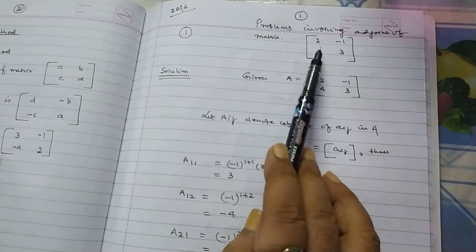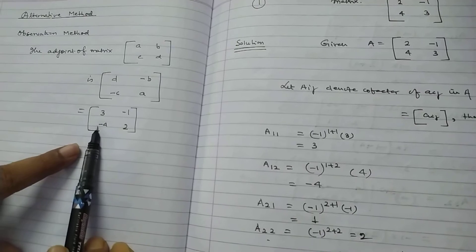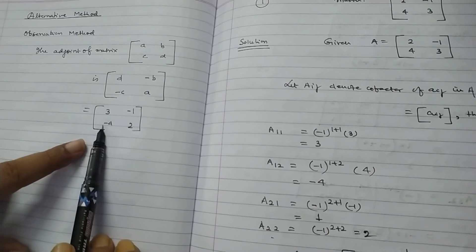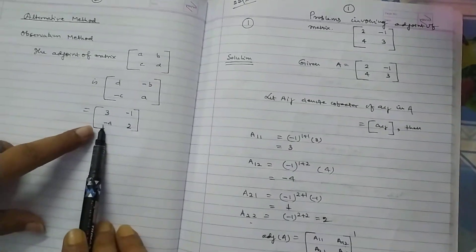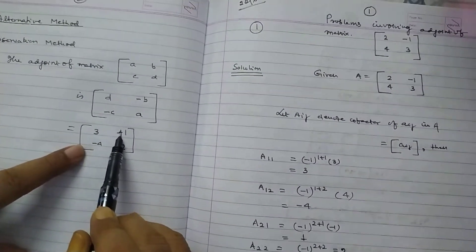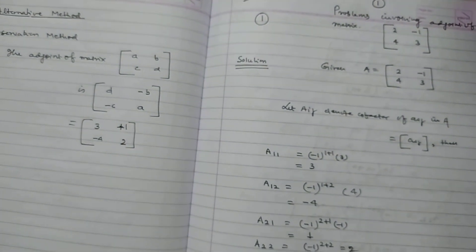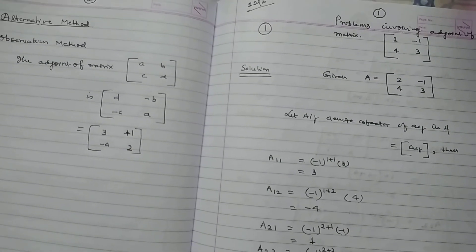After changing the diagonal elements, we have 3, 2. And we change the sign. Then, automatically, it will be minus 4 and plus 1. Minus 4 and plus 1. In this way, you can solve this problem. Thank you. Thank you very much.